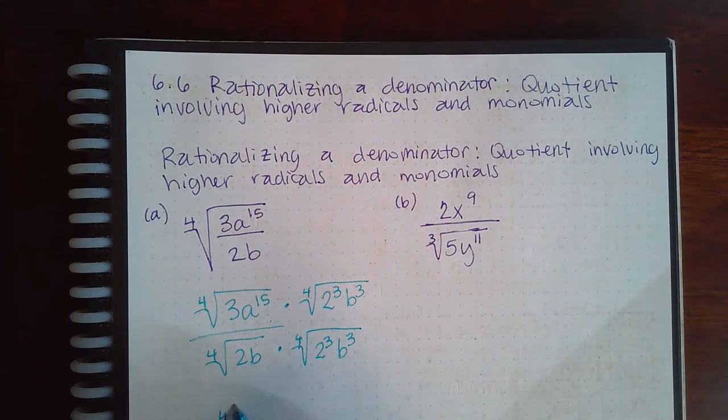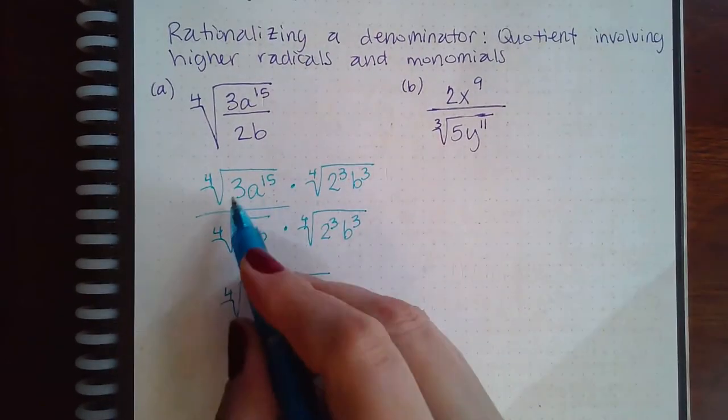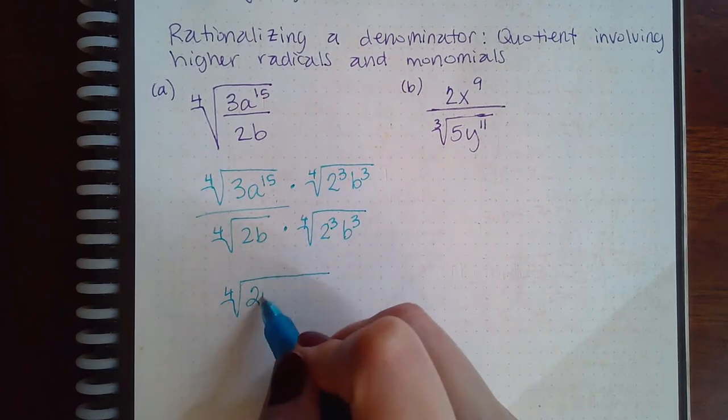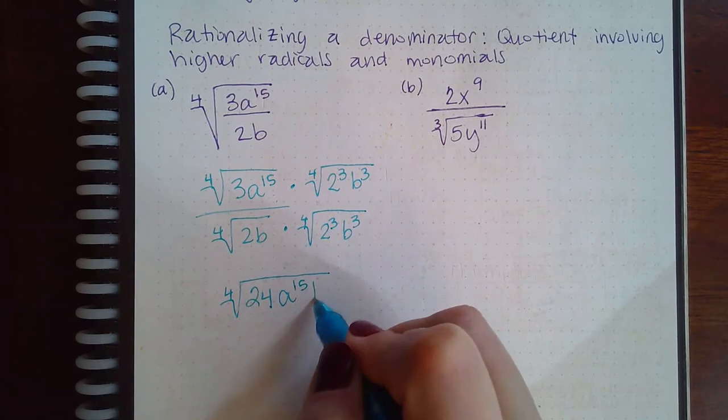So then in the top, you're going to end up with, let's see, 3 times 2 to the third. That's the same as saying 3 times 8. So I end up with 24. I end up with a to the 15, and b to the third.